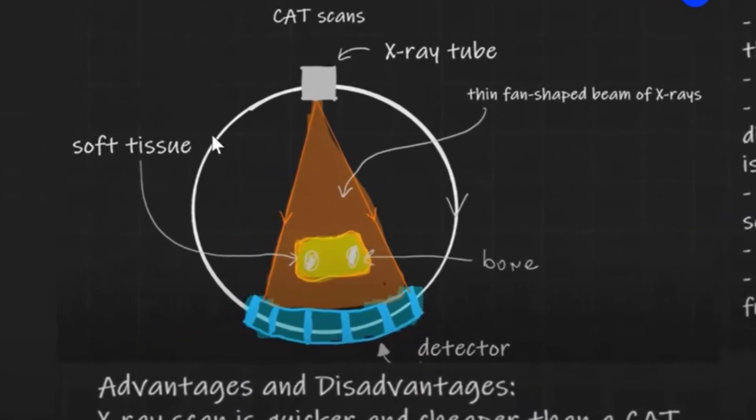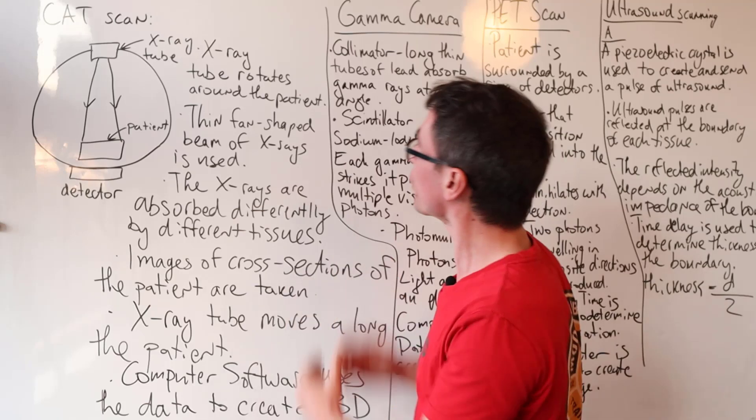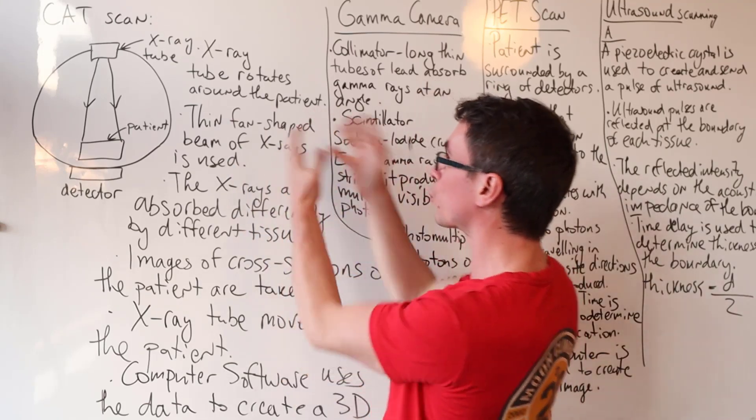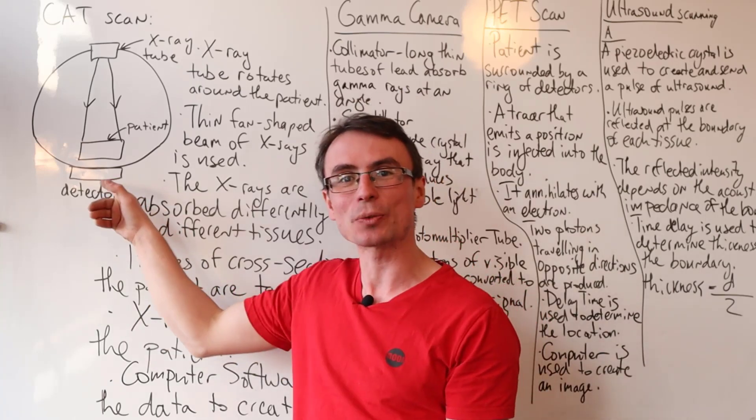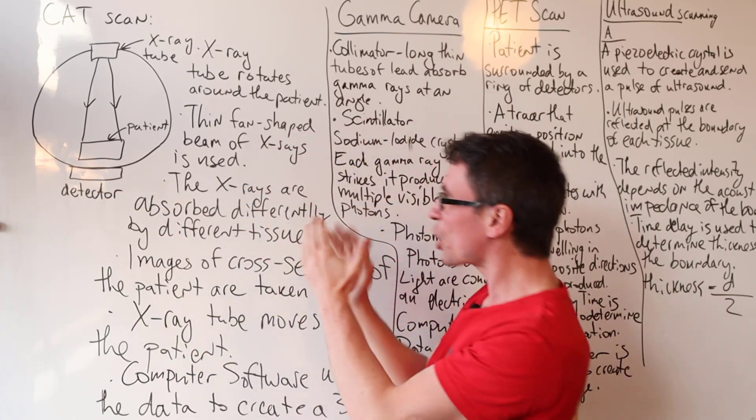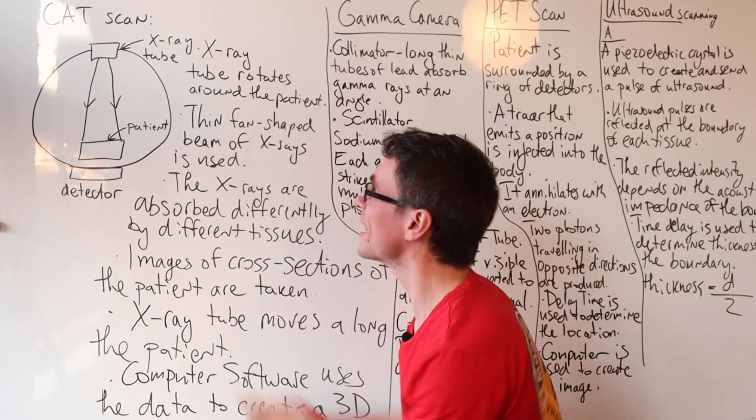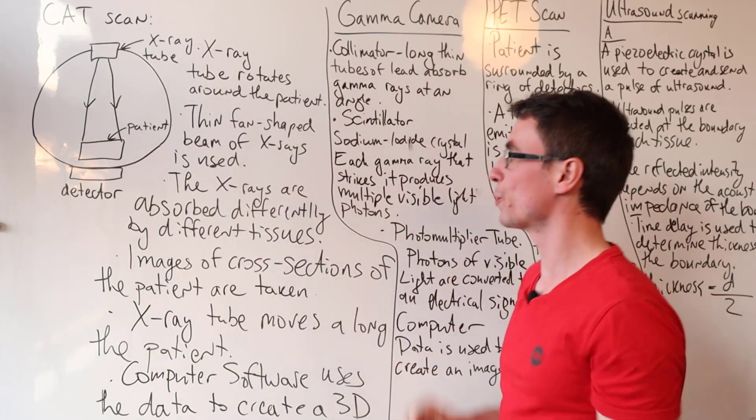What is the principle of operation of the CAT scan? Well, first of all, we have an x-ray tube that rotates around the patient. And there's a detector directly behind it. There's a thin fan-shaped beam of x-rays that is actually used.